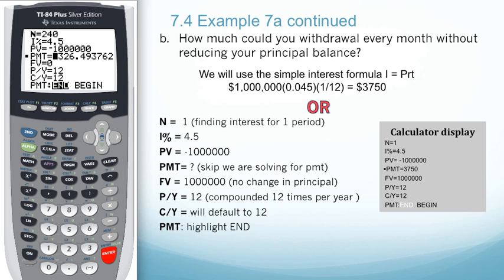The other way we can do this is use the TVM solver and set the principal value, or the present value, equal to the future value, just keeping the signs opposite. Let's go ahead and put this in.